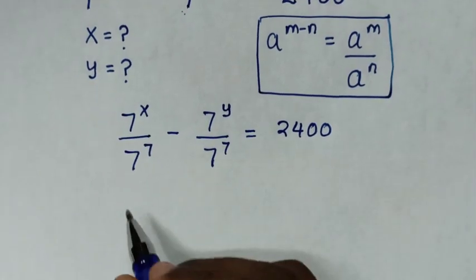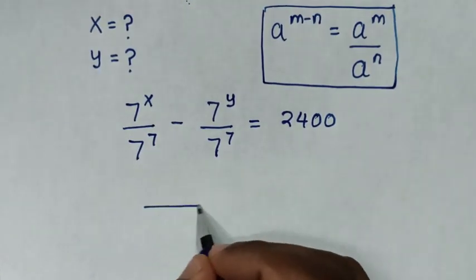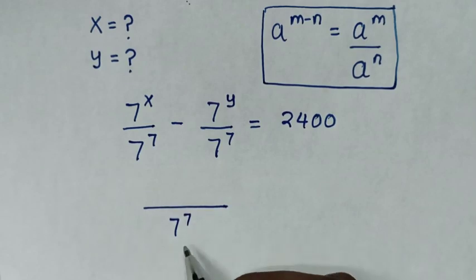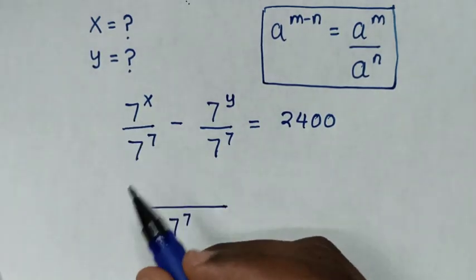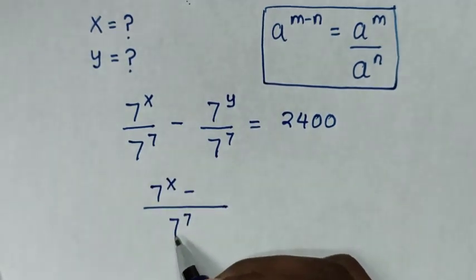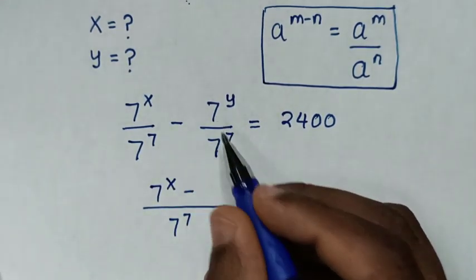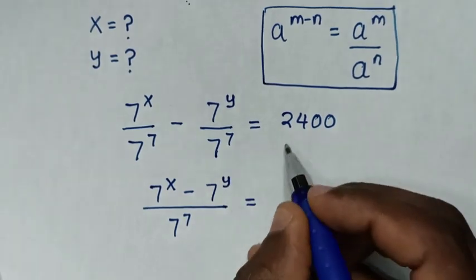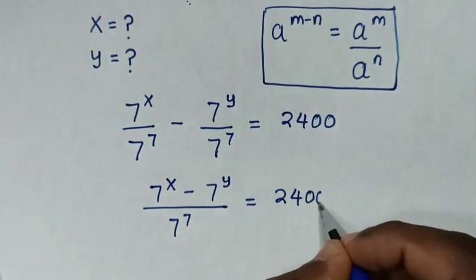Then in the next step, the LCM is 7 power of 7, so it will be over 7 power of 7. This divided by this is 1, so 1 times this is 7 power of x, minus 1 times this is 7 power of y, is equal to 2400.